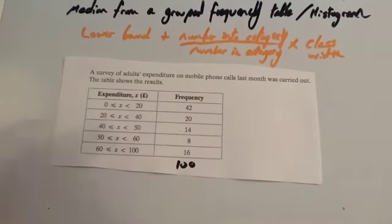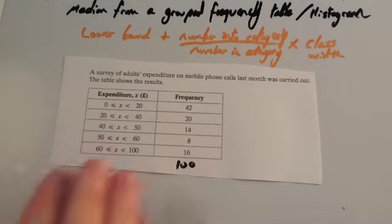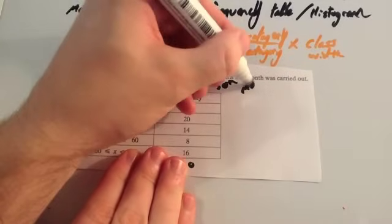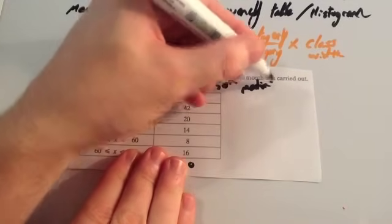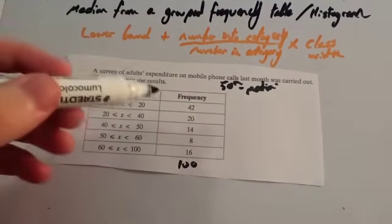And we want to work out the median, the middle one. Now because this is an estimate of a median, we're just going to half this 100. We're not going to add one and half it. So we're just going to half it and we're going to be looking for the 50th person. Now strictly speaking, that isn't the exact median. It's just that the 50th person is the median. We're just taking an estimate. So looking for the 50th person.